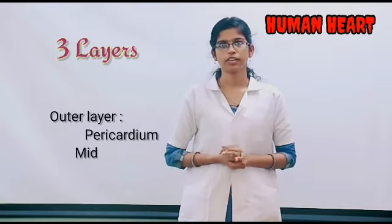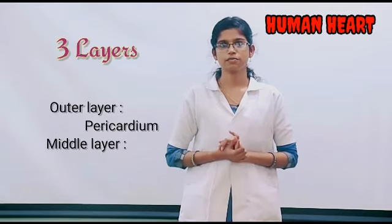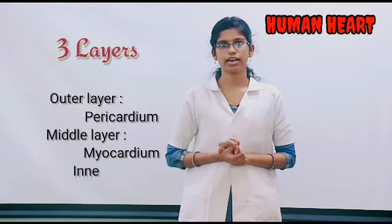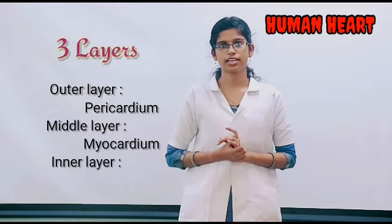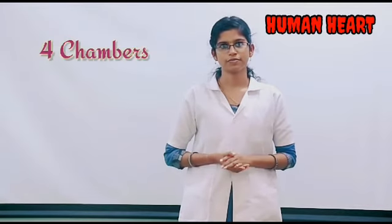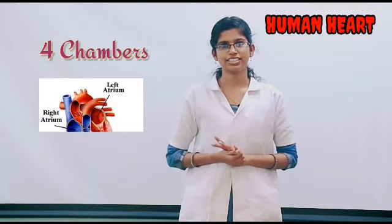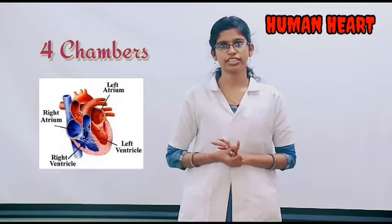The middle layer is myocardium and the inner layer is endocardium. It weighs about 300 grams in males and 250 grams in females. It is about 12 by 9 centimeters in height. It has four chambers: right atrium, left atrium, right ventricle, and left ventricle.